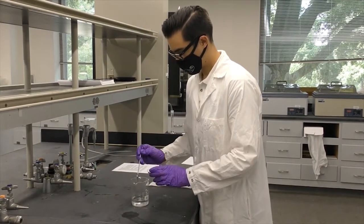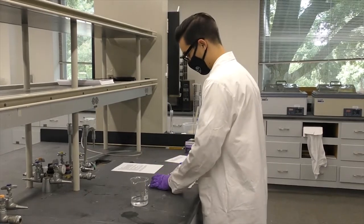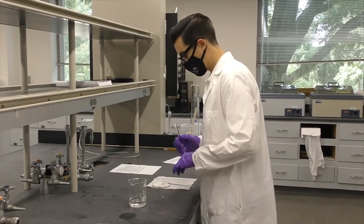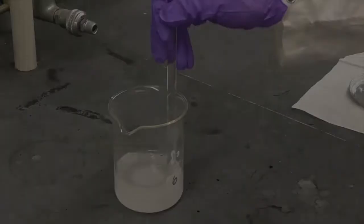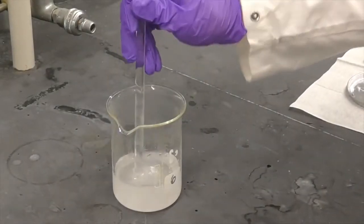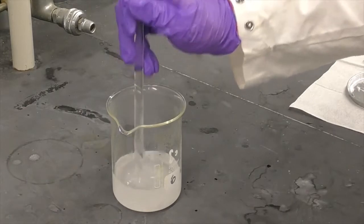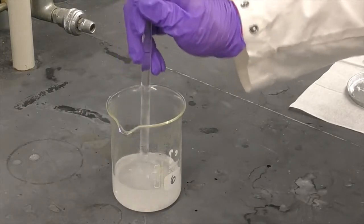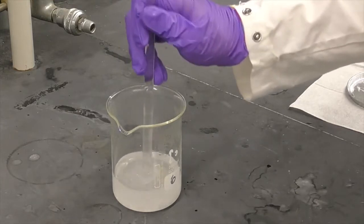When sodium hydroxide contacts water, it produces a large amount of heat, so you want to do this slowly and carefully. You can add a few pellets and stir the solution using a glass rod until all the pellets dissolve, and repeat this procedure until all of the sodium hydroxide has been dissolved. Follow the guidelines outlined in the safety section of the lab manual for more information.